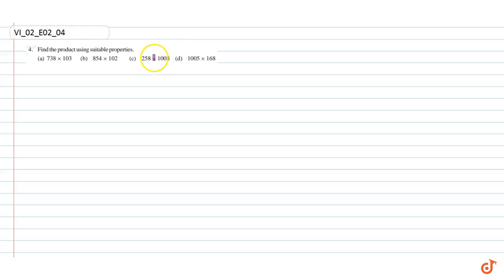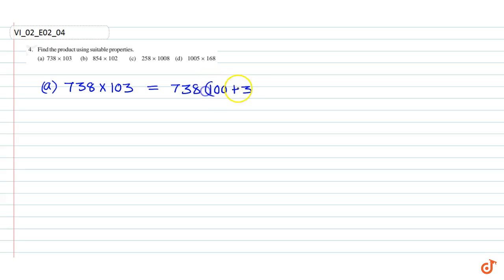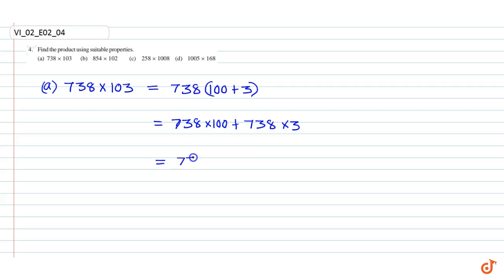In this question we have to find the given products using suitable properties. Part A: 738 into 103. This is equal to 738 into 100 plus 3. Using distributive property we can write 738 into 100 plus 738 into 3.